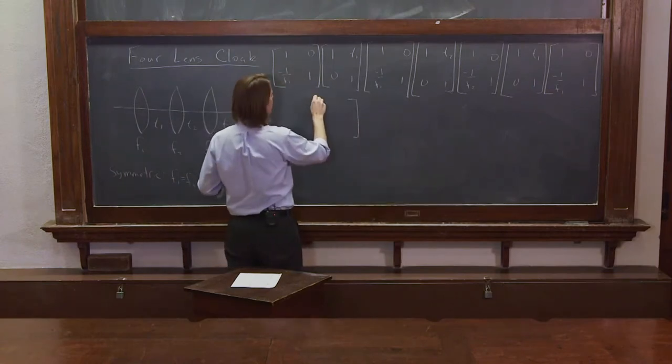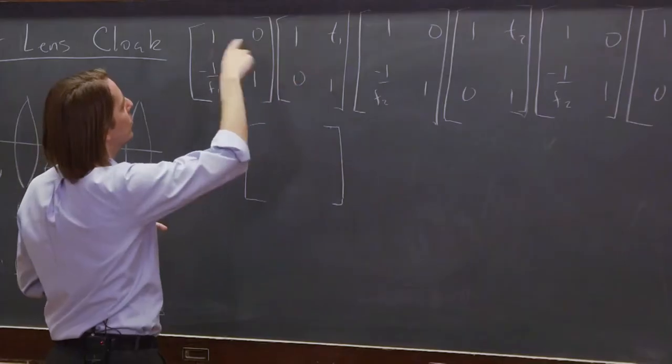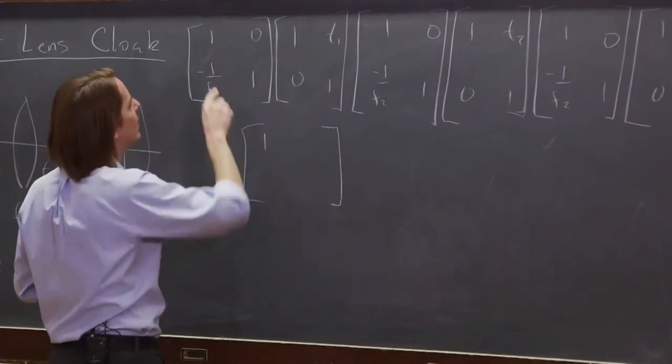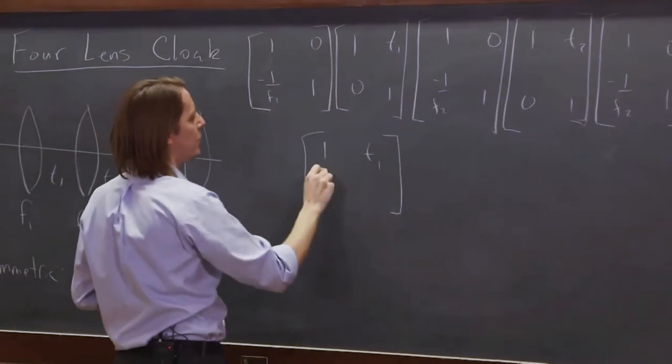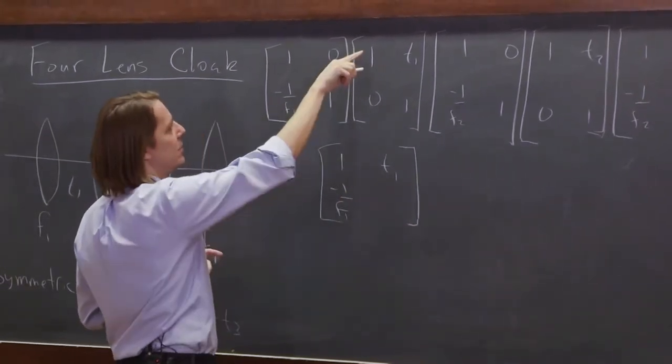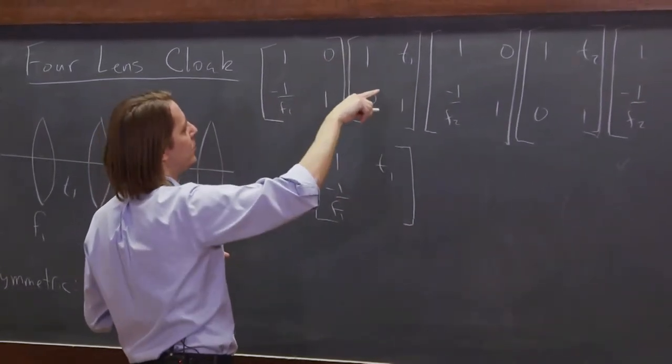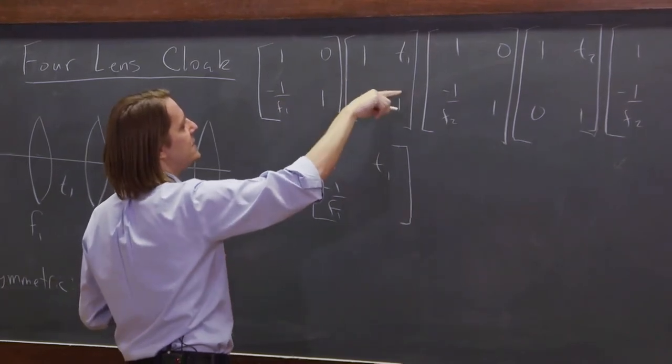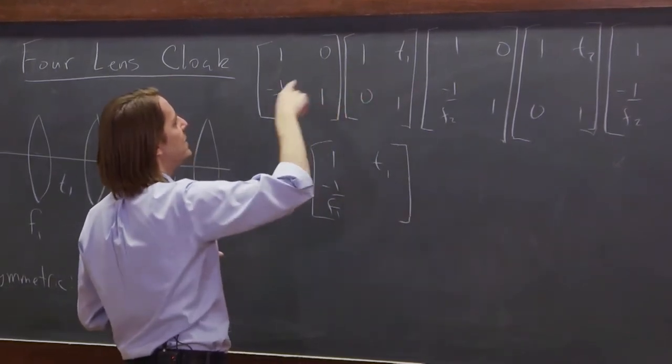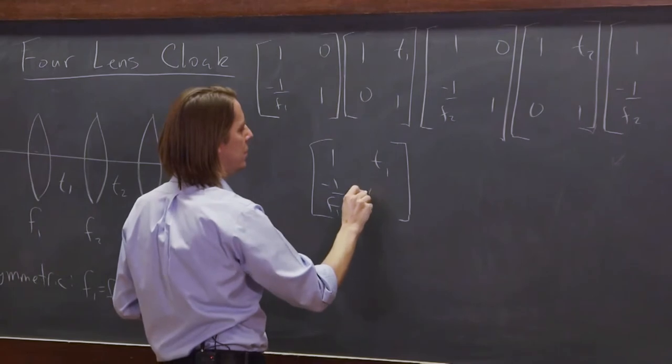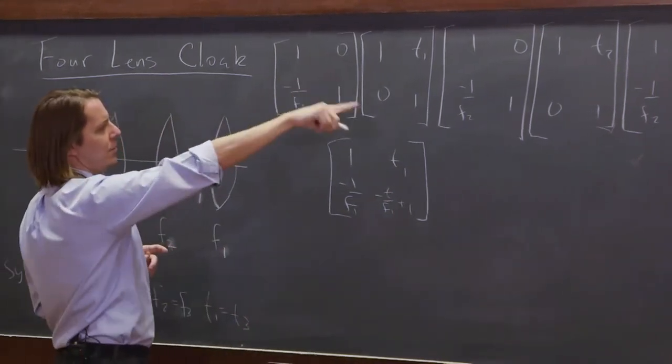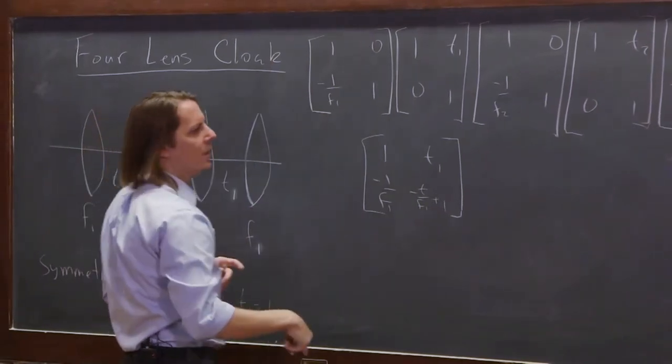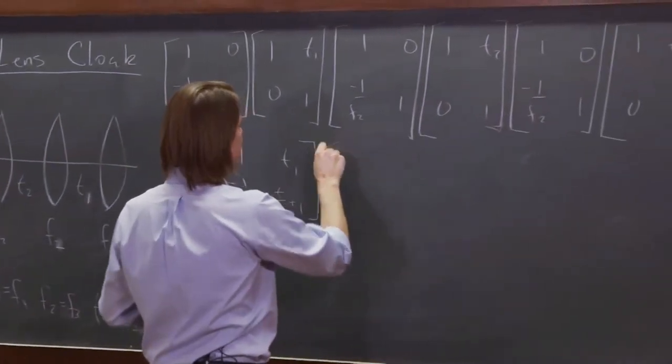So these two. Here we go. So 1 times 1, 0 times 0, 1. And that is T1. And this becomes minus 1 over F1, times that 1 and 0. And this becomes minus T1 over F1, plus 1. All right, minus T1 over F1, plus 1.